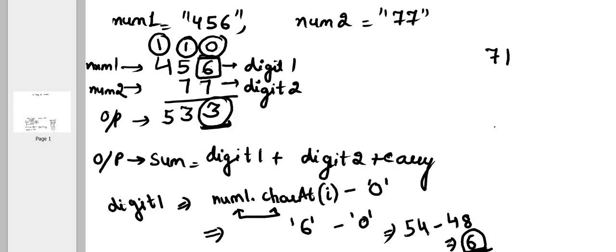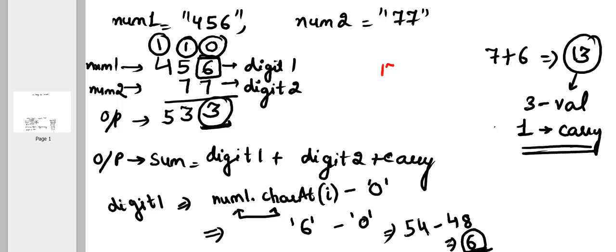When you sum 7 plus 6 that is 13. Out of which 3 will be your value and 1 would be your carry. How will you find that? So if you do 13 mod 10, what will you get? You will get 3.